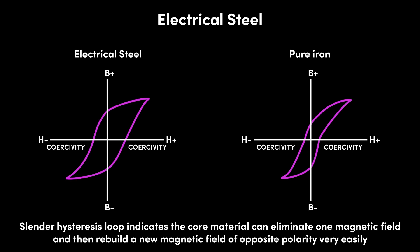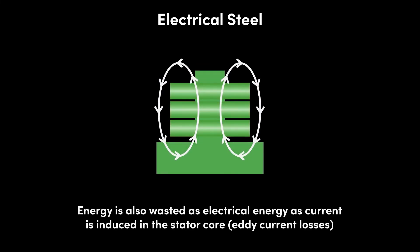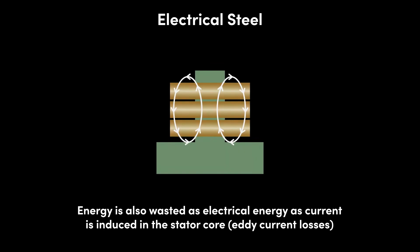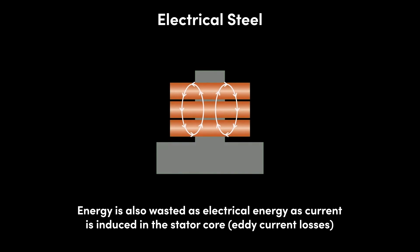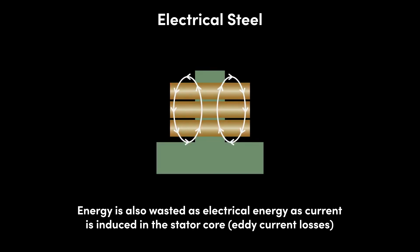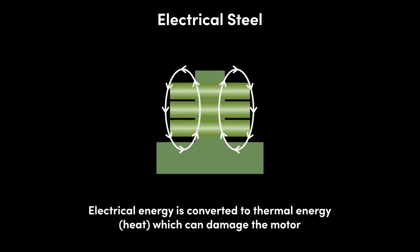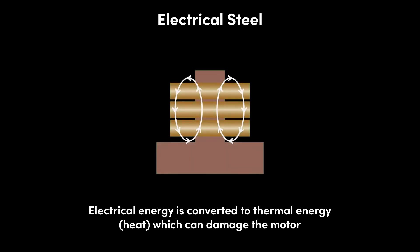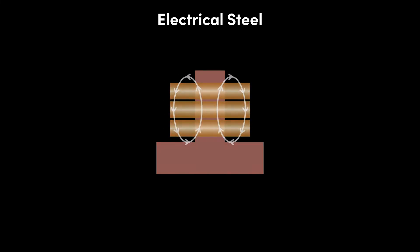In the stator core and the rotor core of an electric motor, a slender hysteresis loop is what we want, since spending electrical energy on eliminating one magnetic field and rebuilding a new one is wasteful and inefficient, taking energy away from what could otherwise be transferred into mechanical energy to rotate the rotor. We call this wasted energy the hysteresis loss. The magnitude of hysteresis loss is given by the area of the hysteresis loop. So why use electrical steel rather than pure iron with its smaller hysteresis loss?